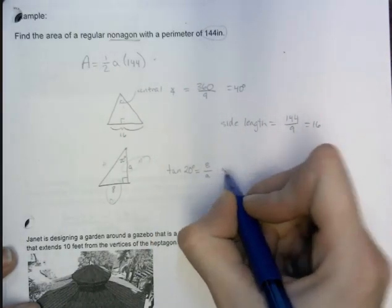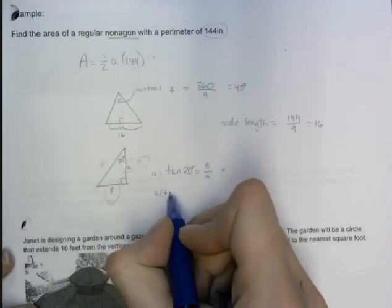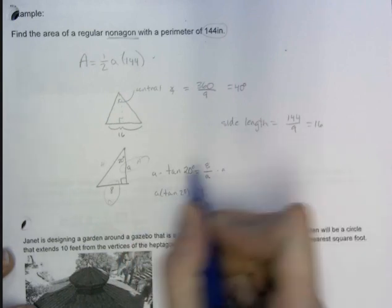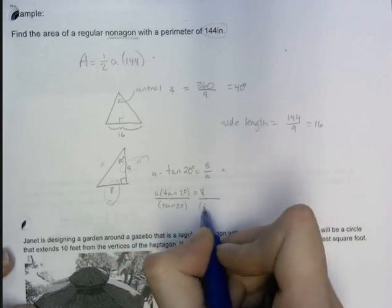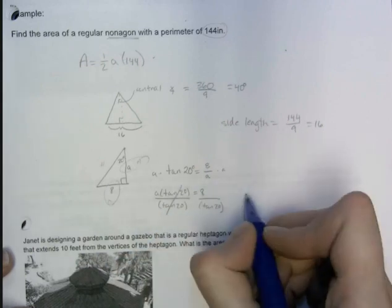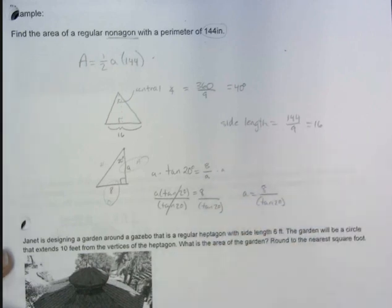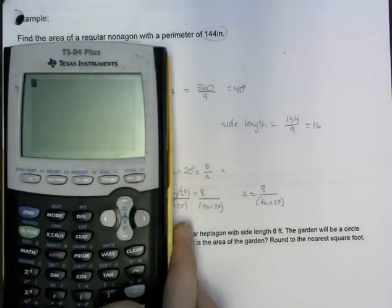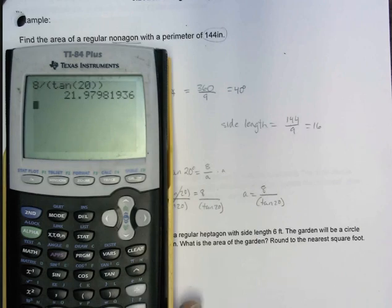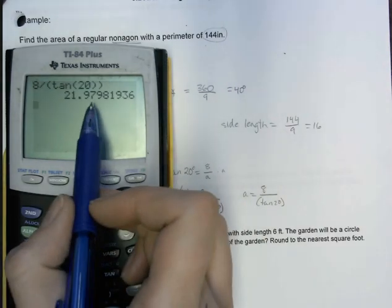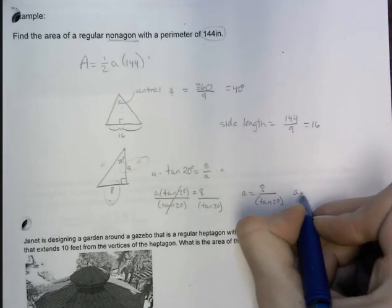Now we have to get a by itself, so I'm first going to get it out of the fraction by multiplying both sides by a. So I've got a times the tangent of 20 equals 8, need to divide by the tan of 20 to get a by itself. So I've got a is equal to 8 divided by the tangent of 20. So I can enter that into the calculator to get our apothem. So 8 divided by tan of 20 is equal to 21.9, and actually that 7 is going to round it up, so we're going to actually say it's approximately 22. So a is 22.